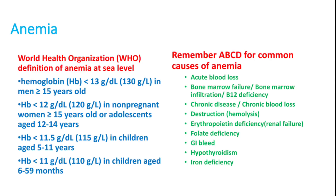When a patient is anemic, oxygen-carrying capacity is reduced and symptoms can appear. All these symptoms can be aggravated if there is lung or heart disease — even at a higher hemoglobin level, patients with heart or lung disease can have symptoms. The commonest cause of anemia is blood loss, whether acute or chronic.